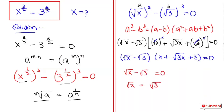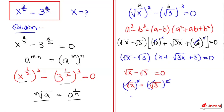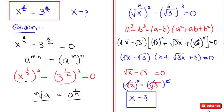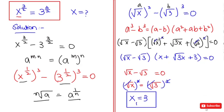Now I want to remove this root, so I am going to raise both sides to the power of 2. This and this get cancelled, so here x is equal to 3. This is our first x value that we get, and if you can see here, if I plug in this value of 3 the answer is correct.